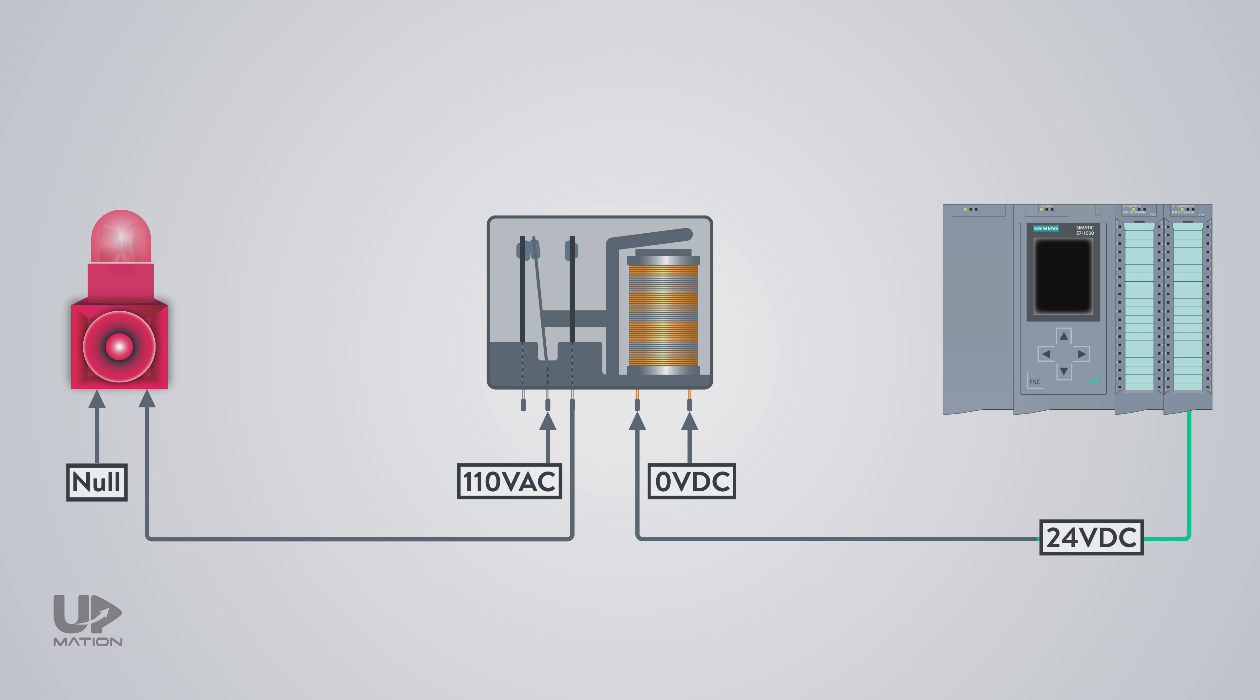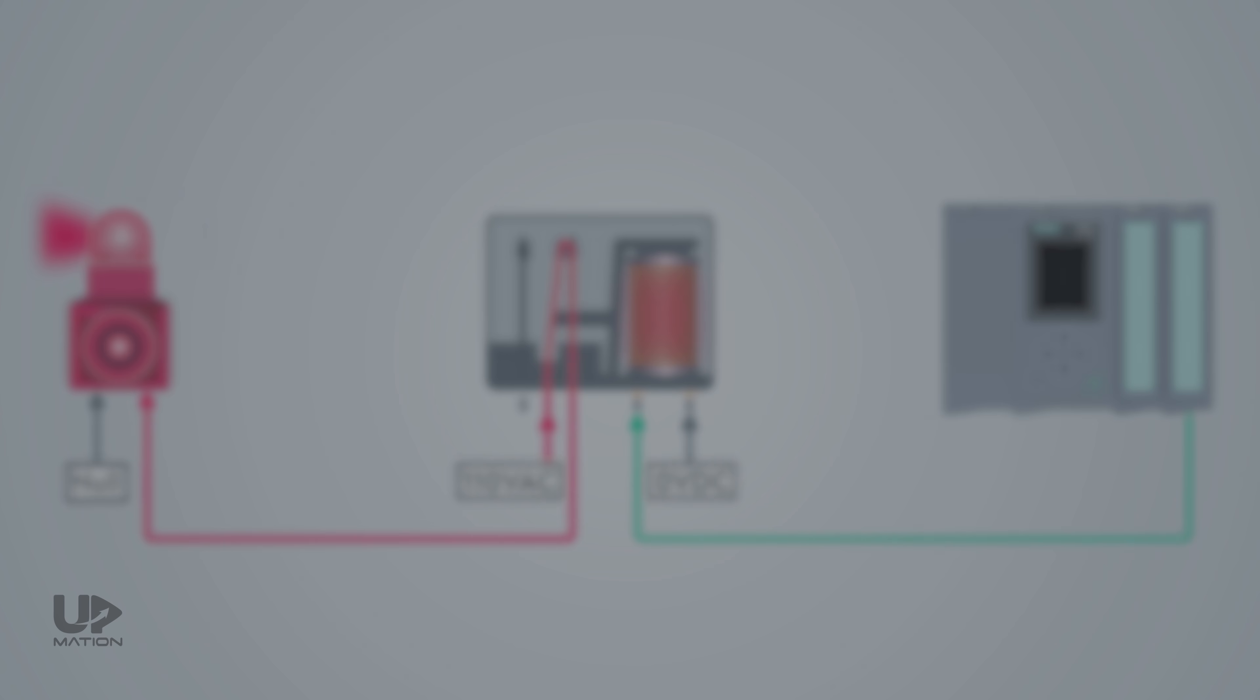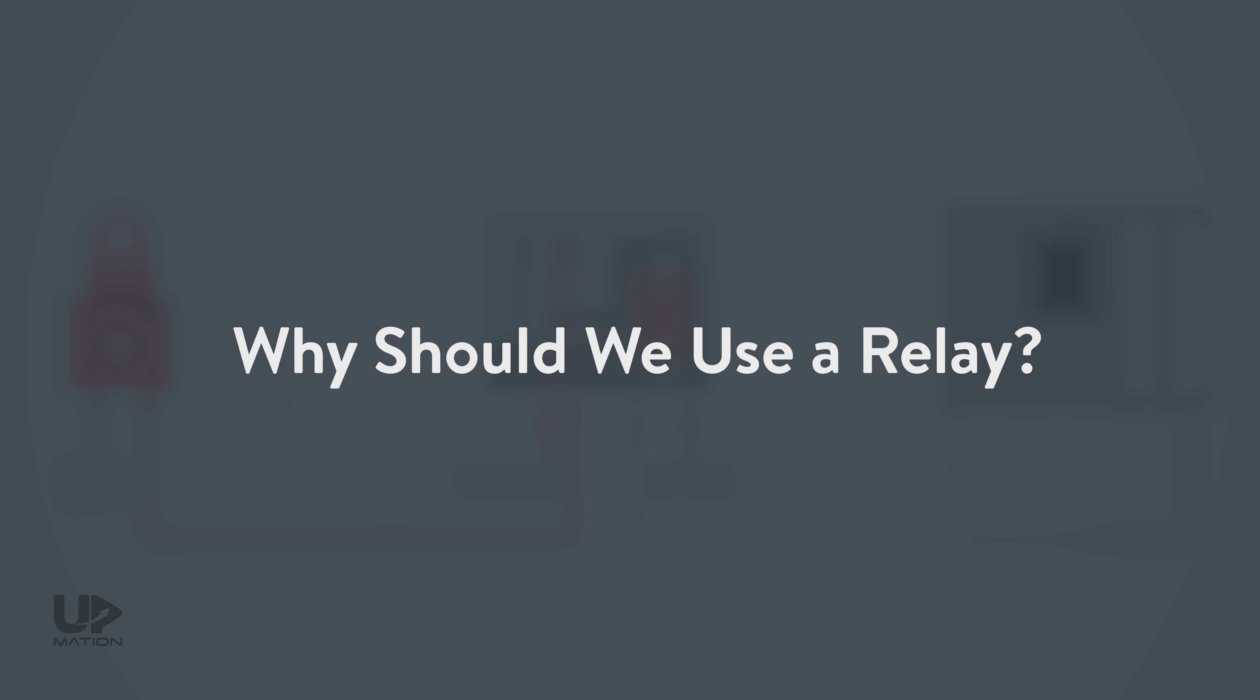Therefore, when the PLC sends the 24 volt DC signal to the relay, the NO contact gets closed and the AC voltage will be transmitted to the siren. So, here is the answer to the question from the beginning of this video. Why we should still use a relay rather than solely using a PLC card?